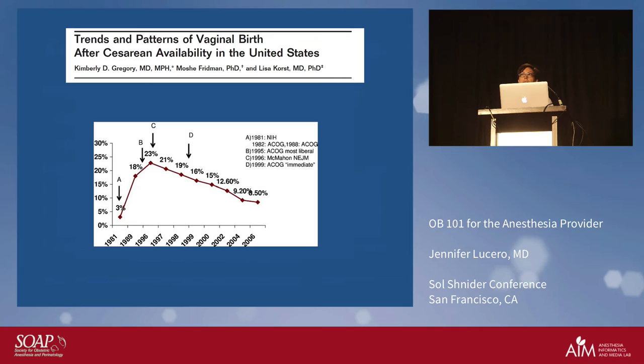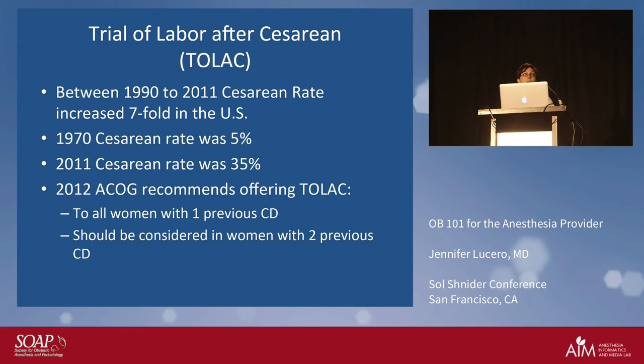We're never getting back to a five percent C-section rate — we're not doing as many operative vaginal deliveries, and our patient population is older. By 2011 the rate reached 35 percent. ACOG's goal, and what we'd all like, is to get down to 20 percent. The goal is to prevent the first C-section and, for those who must have one, to still offer a trial of labor for subsequent deliveries.